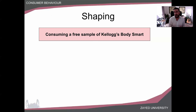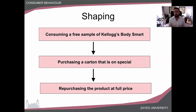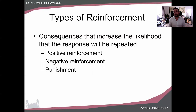For example, I consumed the free sample of Kellogg's Body Smart, felt it tasted great, and that was a reinforcement. Next time I'm in the mall, I go to buy my normal cereal but I see that a box of Kellogg's Body Smart is on special — so I get to buy the cereal on sale, which is another reinforcement. I eat more and it tastes great, more reinforcement. Then after eating the cereal for a month, I'm starting to feel fantastic, healthier, thinner — yet another reinforcement. Getting all these reinforcements in little baby steps means that next time I'm in the store, I'm willing to buy it at full price. My behavior has been shaped in baby steps to get me to buy that product.